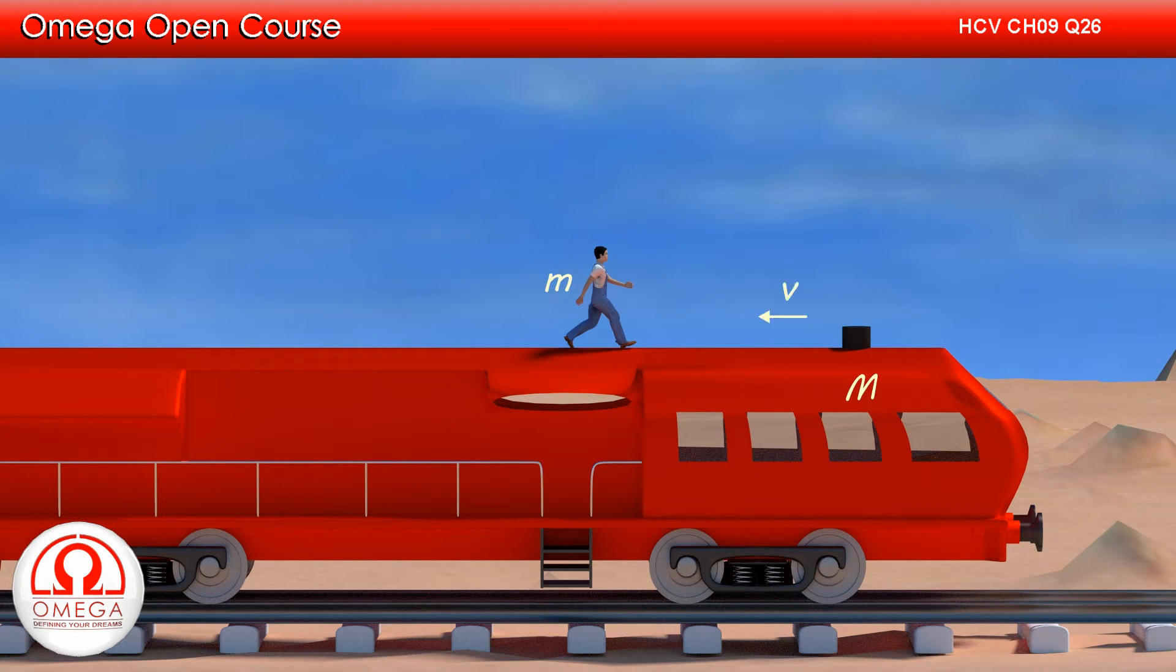Let the speed of the man with respect to the ground be v0. Since there is no friction, there is no horizontal force acting on the railroad car and man system.